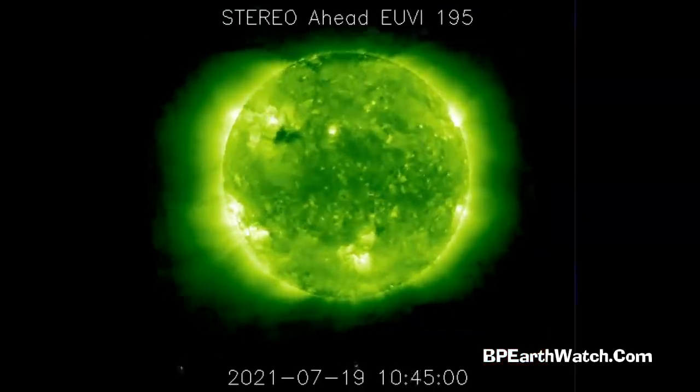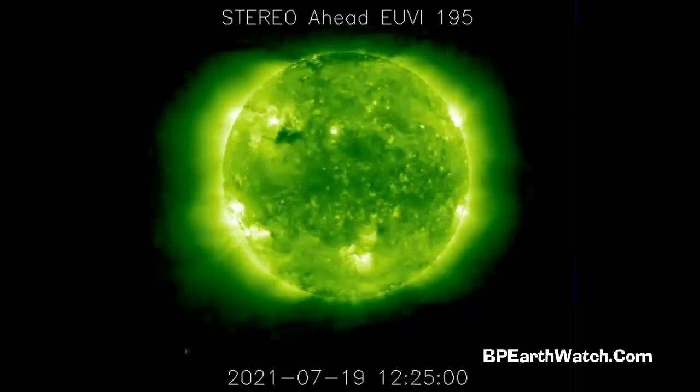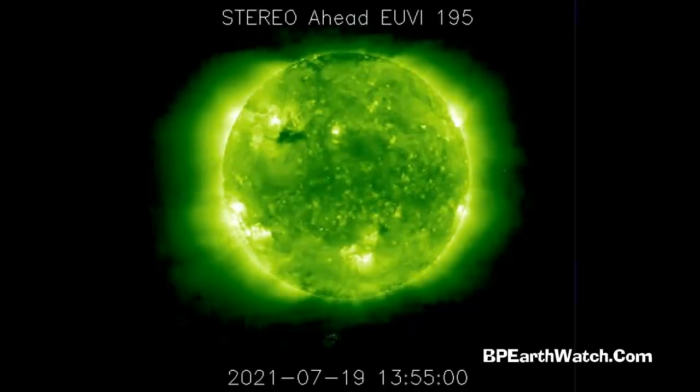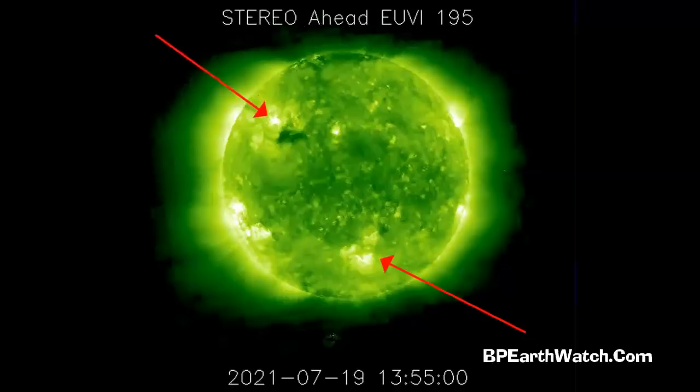Now, this is stereo-a. It's giving us the side view, not the front view that we're looking at from the earth satellites, and what it's showing is some of the big sunspots that are on the back side of the sun that are just turning.